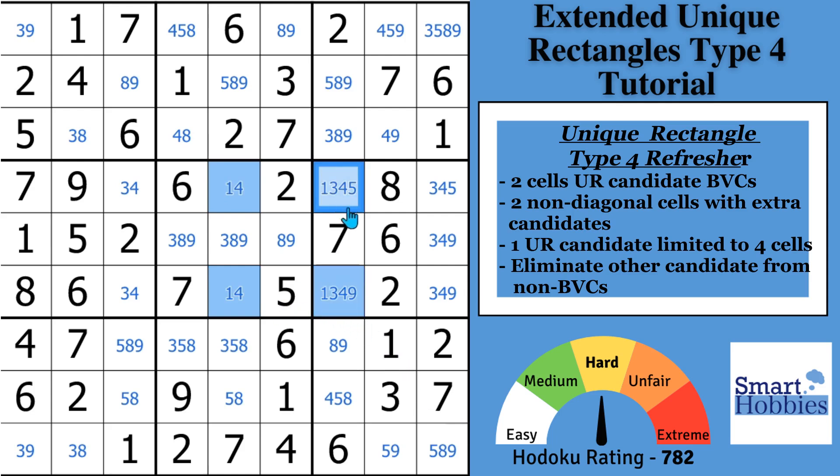And the 1 and 4 have the same restrictions in the block and in the column and across the rows. And so you'd have two solutions to the puzzle. And we know it's a unique solution that can't happen. What you end up doing is you remove the 4s from these two cells, knowing that they can't be there. The 4's got to be one of these other candidates in the block. So that's unique rectangle Type 4.